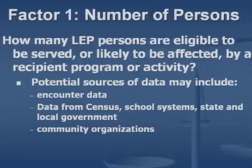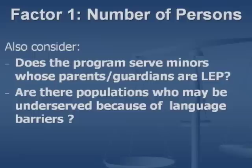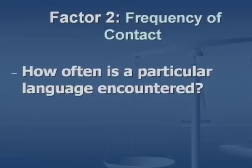Factor one — how many persons are eligible to be served or likely to be affected by a recipient program or activity? There are several potential data sources: encounter data, which encourages entities to capture information about clients and the languages they speak; census data; school systems' data on languages spoken in the home; state and local government data; and community organizations representing ethnic groups, which can provide at least anecdotal data. You also need to consider whether the program serves minors whose parents or guardians are limited English proficient, or populations who may be underserved due to language barriers.